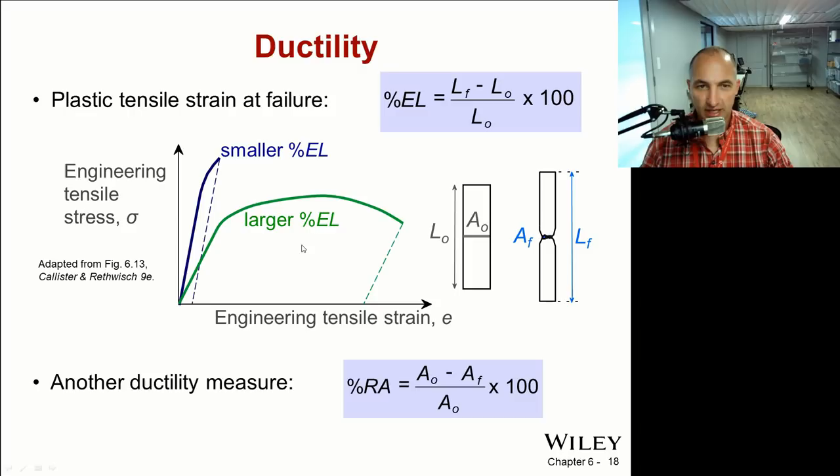There's another ductility measurement that's synonymous to percent elongation and that's RA which is reduction in area. That's the original area minus the final cross-sectional area over the original cross-sectional area times 100. In a ductile sample we'll have necking that occurs, a smaller cross-sectional area at the point of fracture, and that will then have a high ductility value associated with it.